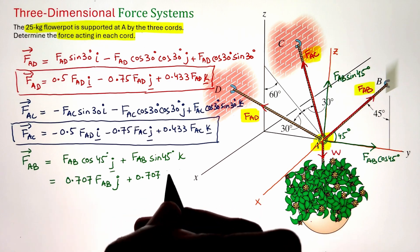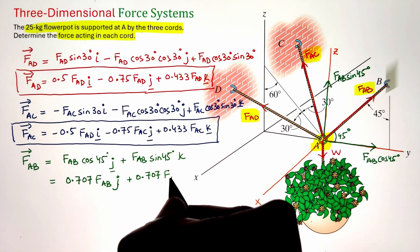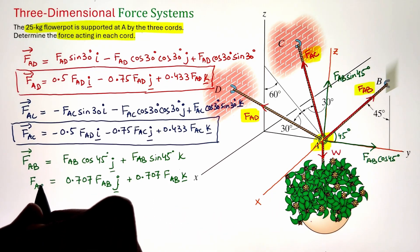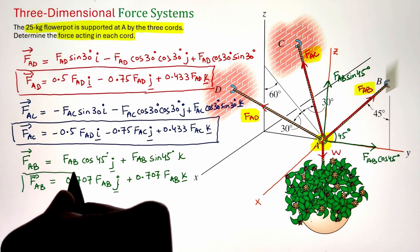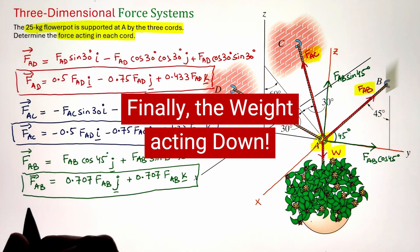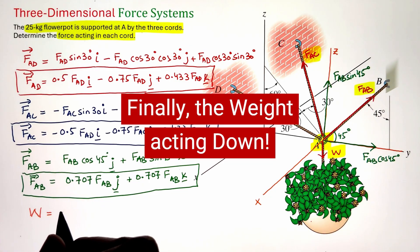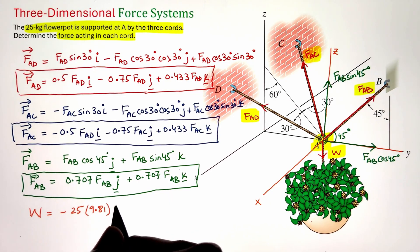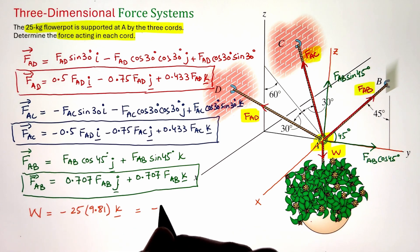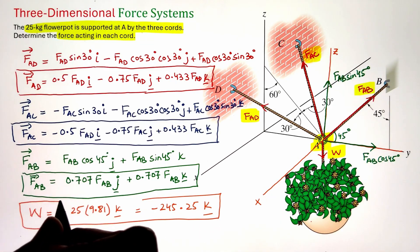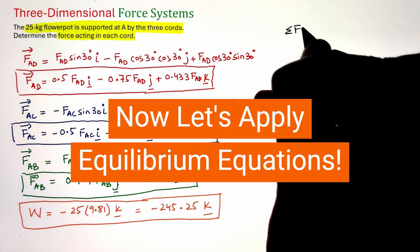Now let's represent the weight of the flower pot in Cartesian vector form. Since it acts downward along the z-axis, W = −25 × 9.81 k. We must remember we are given the mass and need to convert it to weight (a force) for the force summation. This gives us W = −245.25 k N.